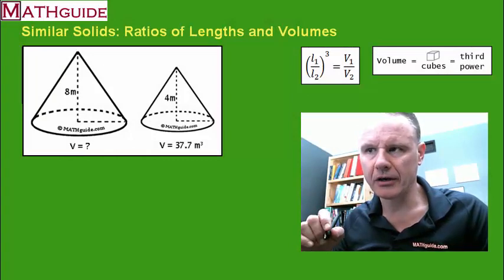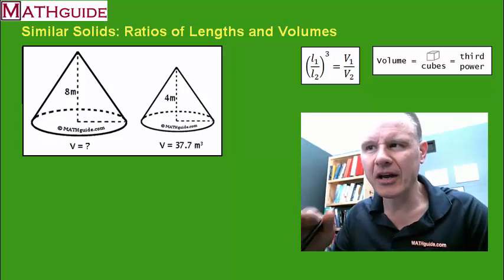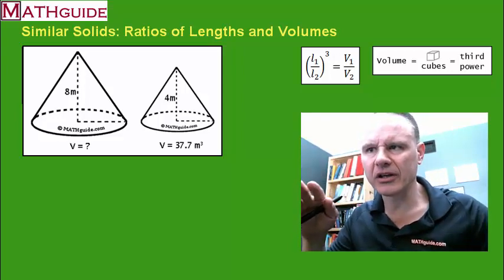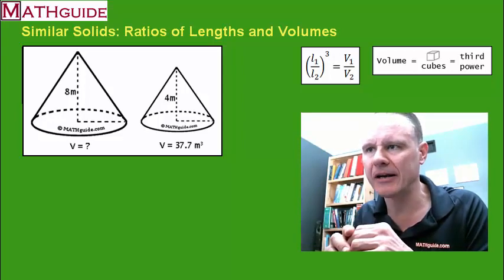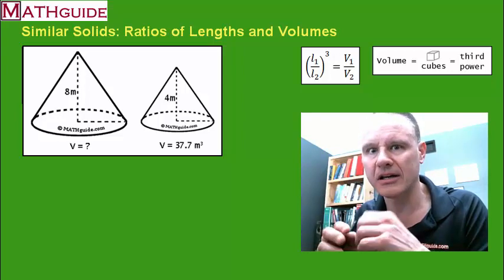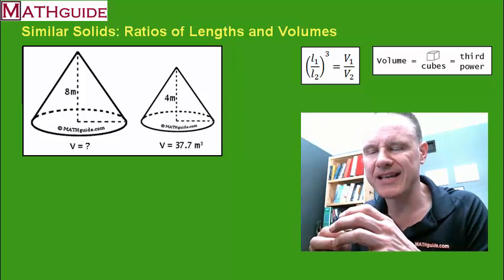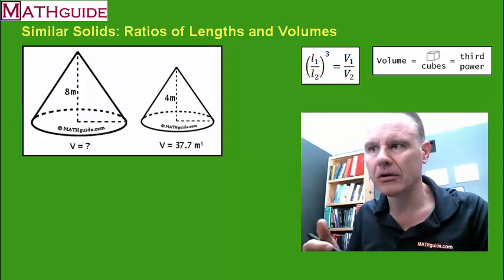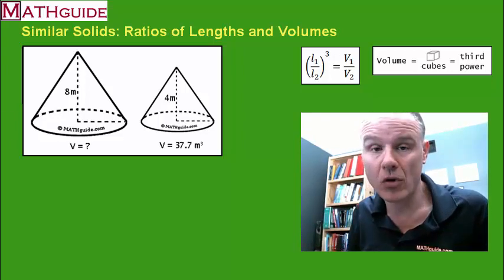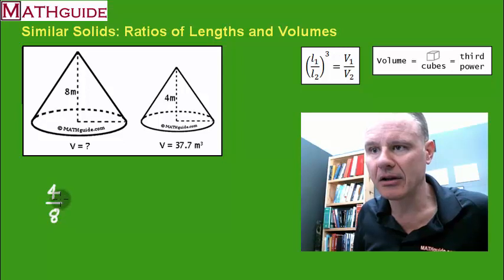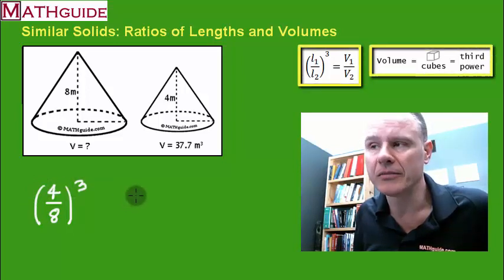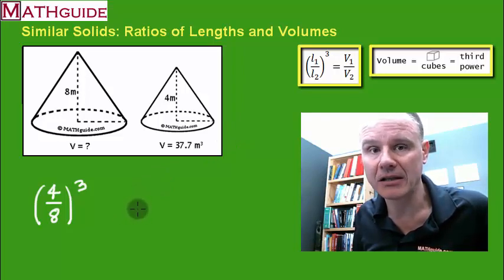These two cones on the screen are similar. Visually, the right cone looks like the shrunken version of the other — they have the same proportions. Assuming they are mathematically similar and all sides have been shrunken by the same ratio, we can apply this relationship. The way you set this up is by taking the ratio of one length to the other. For this problem, I'm going to use the small height to the large height, and I'm going to cube that ratio — because we're dealing with volumes, and cubing is the connection between the ratio of lengths and the ratio of volumes.